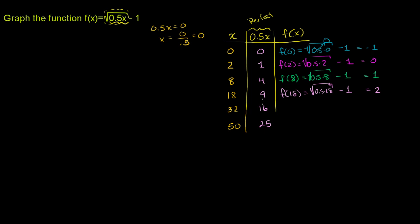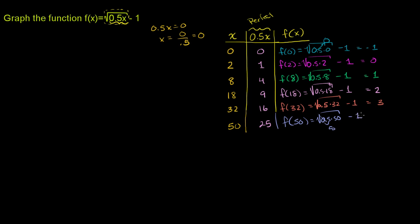f of 32 equals the square root of 0.5 times 32 minus 1 — that's the square root of 16 minus 1, so 4 minus 1 equals 3. And f of 50 equals the square root of 0.5 times 50 — 0.5 times 50 is 25, the square root is 5, so 5 minus 1 equals 4.